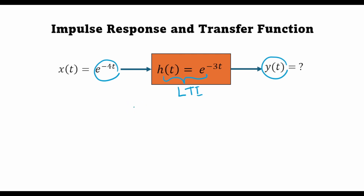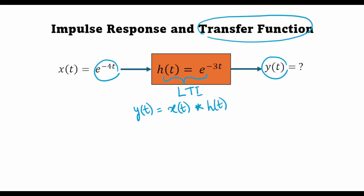We already know that the response y(t) for an LTI system is given as the convolution of the input with the impulse response h(t). However in today's lecture we'll be using transfer function analysis. We will find out the frequency domain response X(s) of the input and also the transfer function H(s), which is the Laplace transform of the impulse response, and multiply the two to get the frequency response Y(s). The advantage of using frequency domain analysis is that we can get rid of the convolution operation and instead just multiply the frequency domain responses to find Y(s).